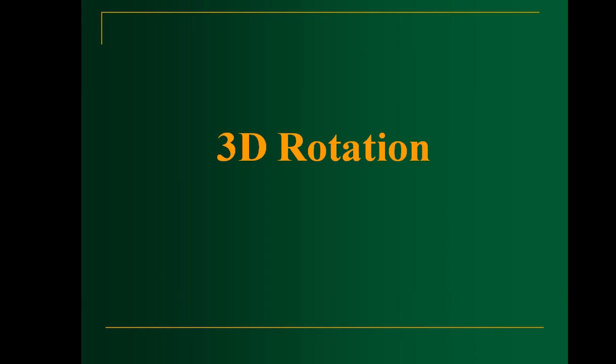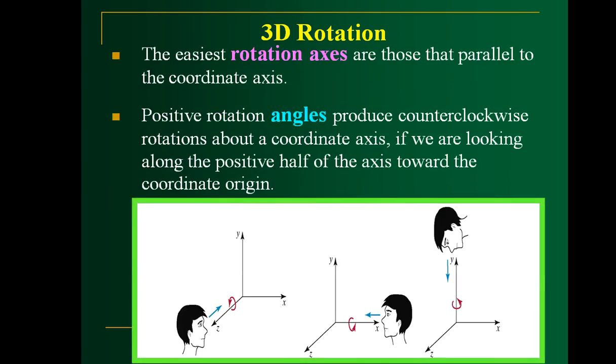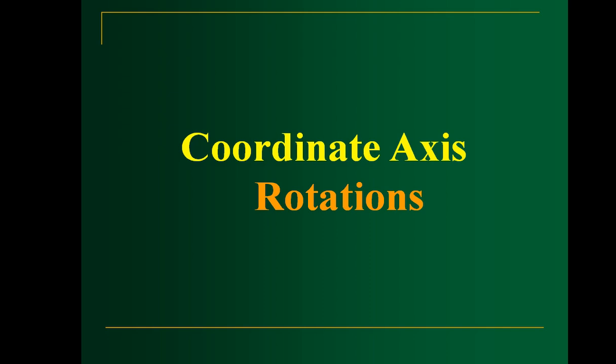Now let us move on to rotation. You can perform rotation by specifying the rotation axis and rotation angle. As mentioned earlier, there is only one rotation for 2D objects, whereas in 3D you can perform three different rotations with respect to the planes. These are pictorial representations for performing rotations with respect to different planes. Generally, positive angles produce counterclockwise rotation; if you use negative angles, you can perform clockwise rotation.